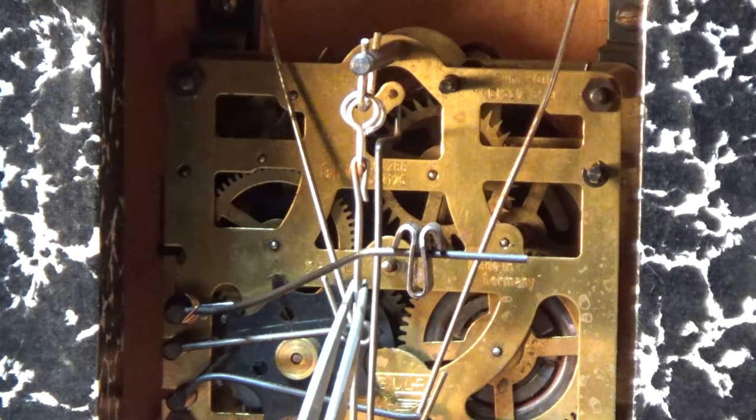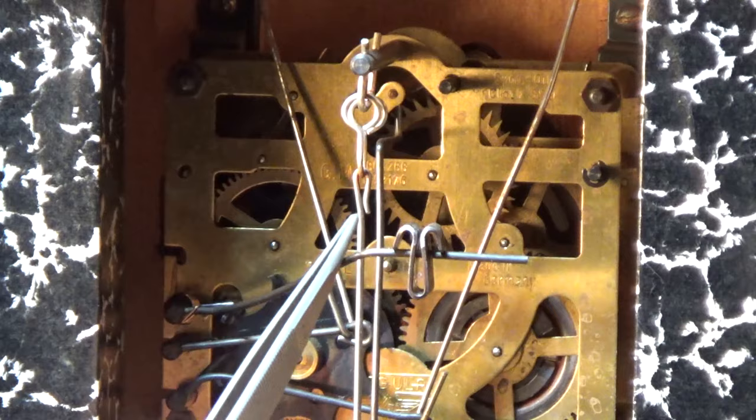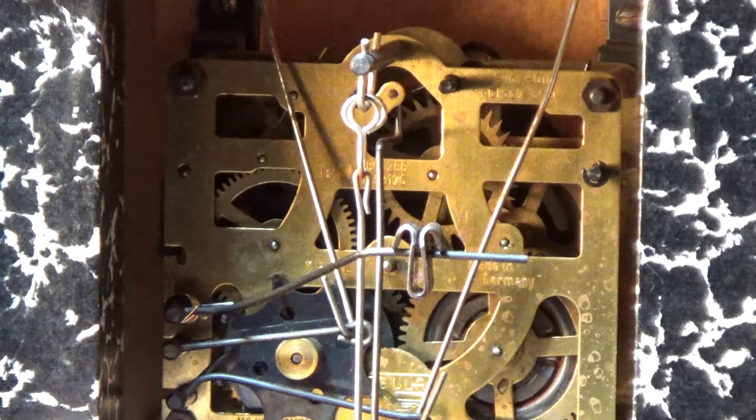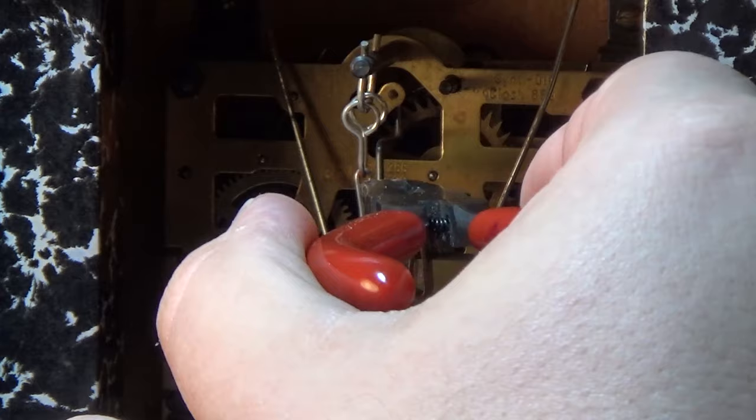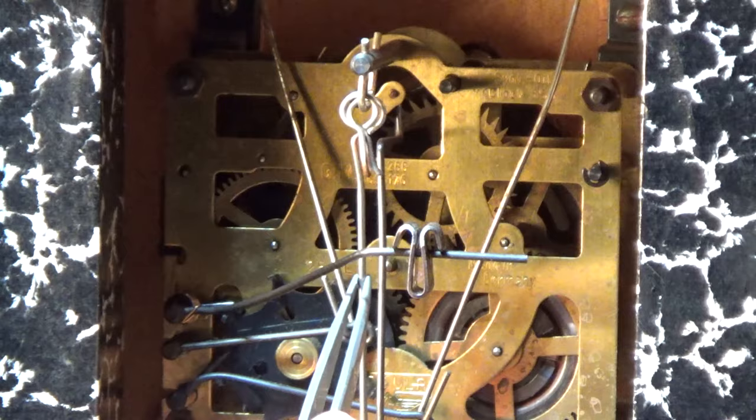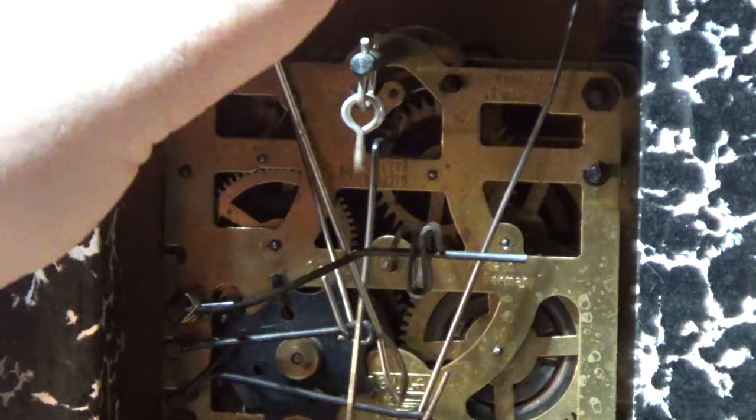Also, a pair of small needle nose pliers along with a good set of tweezers are your best friends here. We'll start by removing the pendulum leader. It is not completely necessary to remove this, but it could be another possible headache when taking the movement out later, so it's best to remove it. We do this by carefully opening up the hook on the top, then sliding it up through the crutch wire sticking out of the back of the movement.